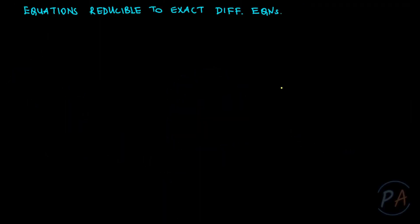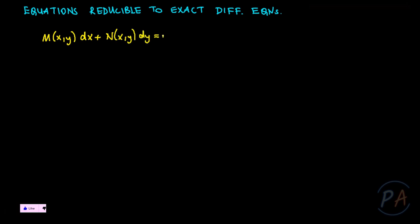Hi everyone. Today we are going to learn to reduce differential equations to some exact differential equations by using different methods. Let's consider a first order differential equation M of xy times dx plus N of xy times dy equals 0, which is not exact — meaning the partial derivative of M with respect to y is not equal to the partial derivative of N with respect to x.